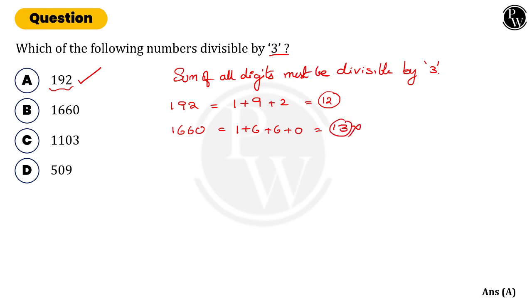Next, 1103: so 1 plus 1 plus 0 plus 3, I will get 5. So 5 is also not divisible by 3. Next one is 509: that is 5 plus 0 plus 9, we got 14.